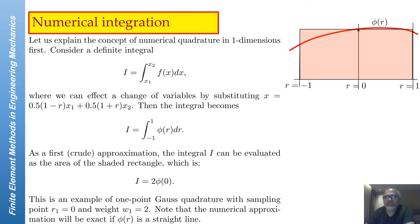Suppose you have an integral from x1 to x2 of f(x) dx. You can easily convert this to an integral from minus 1 to 1 by a simple change of variables. If you make a change of variables from x to R so that x equals half (1 minus R) x1 plus half (1 plus R) x2, then when x equals x1, R equals minus 1, and when x equals x2, R equals plus 1.